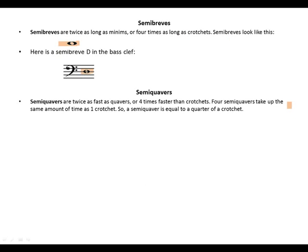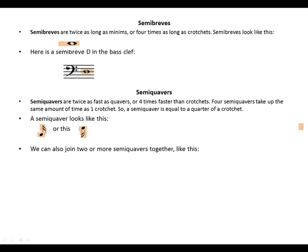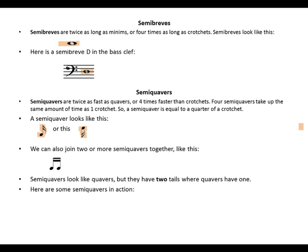Semiquavers. Semiquavers are twice as fast as quavers or four times faster than crotchets. Four semiquavers take up the same amount of time as one crotchet. So, a semiquaver is equal to a quarter of a crotchet. A semiquaver looks like this. We can also join two or more semiquavers together like this. Semiquavers look like quavers but they have two tails where quavers have one. Here are some semiquavers in action. We see that these are two tails.